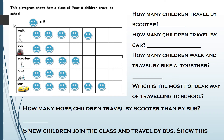Here we have a third problem showing a pictogram of how Year 6 children travel to school. Each smiley face is worth five — well done if you found the key, that's always a good place to start. How many children travel by scooter? There are four smiley faces, so four lots of five is twenty. How many children travel by car? There are six lots of five — so 5, 10, 15, 20, 25, 30.